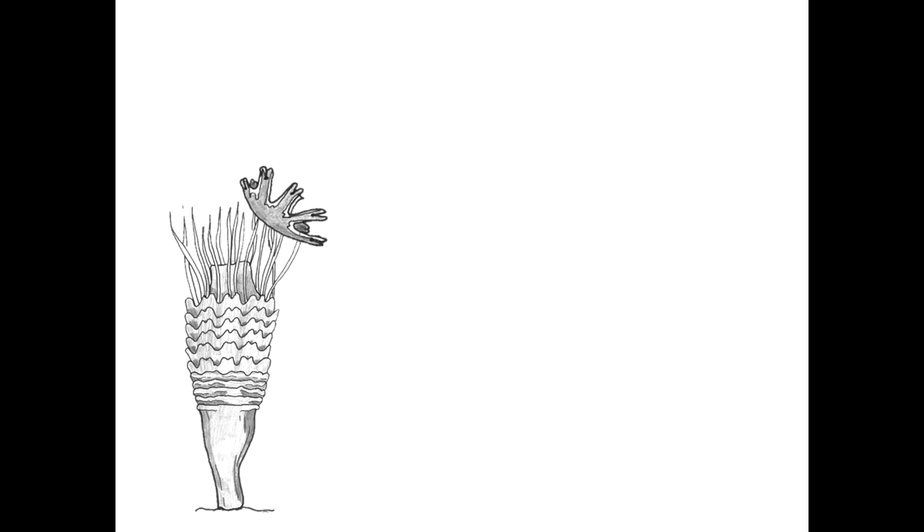The first form of asexual reproduction that may occur is budding, in which a new organism grows out from the body of the parent organism. This is the most common way for an ephyra to form.